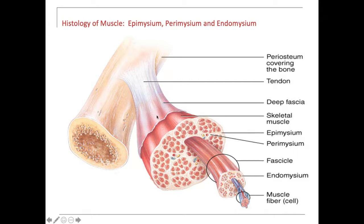Then we have fascia, which is a thin translucent layer. For those of you that are carnivores, if you've ever had a piece of chicken — a drumstick or something — when you peel off the skin, the epidermis, you can see between the skin and superficial to the muscle there's a thin translucent layer. That thin translucent layer is called fascia.